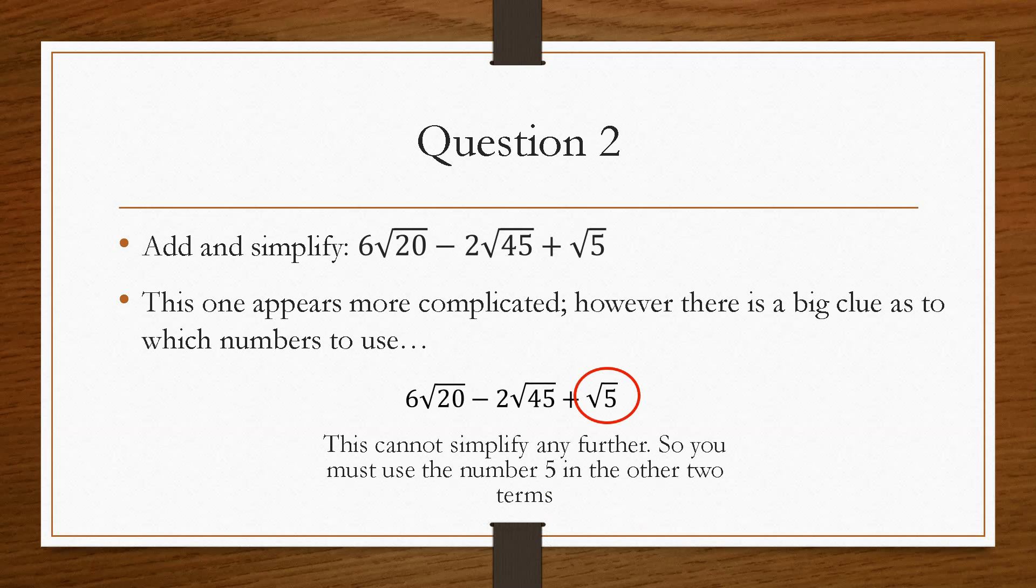So in order to add the other 2, or take away the other surds, you must incorporate 5, because they must contain root 5 at some point.